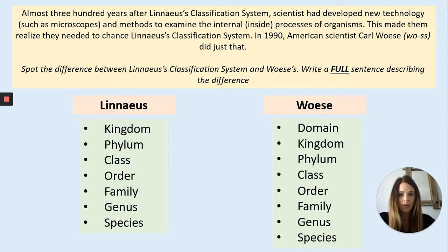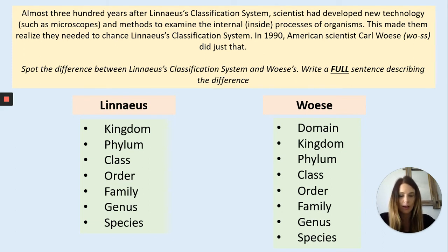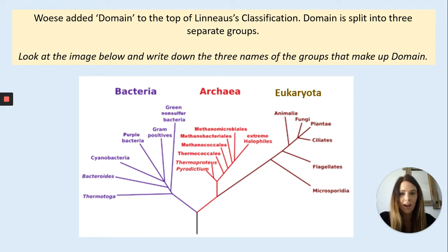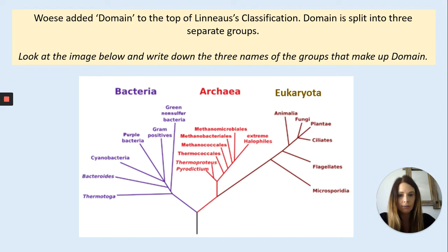Almost 300 years after Linnaeus' classification system, scientists developed new technology — microscopes came into play and we could start to see inside organisms what they were made up of. This led scientists to say we could do with a slight tweak to the classification system. Carl Woese came up with this tweak. Can you spot the difference between Linnaeus' and Woese's systems? Woese added the word 'domain' at the top of Linnaeus' classification system, and detailed that the domain be split into three separate groups: things fall under either bacteria, archaea, or eukaryota.